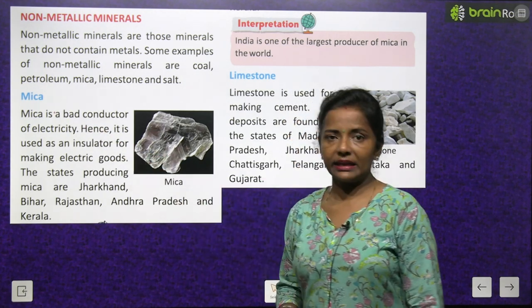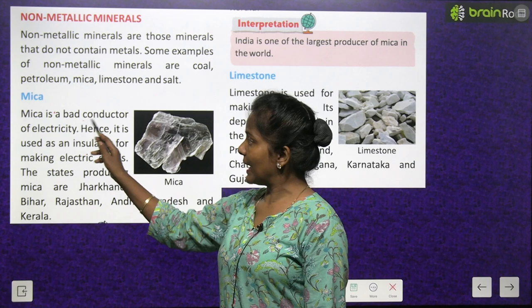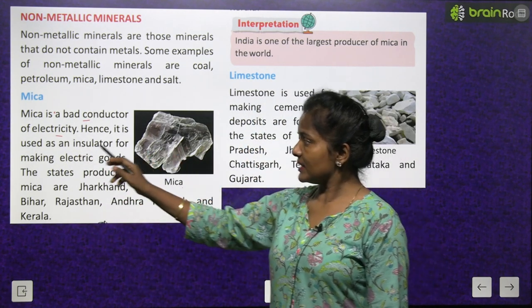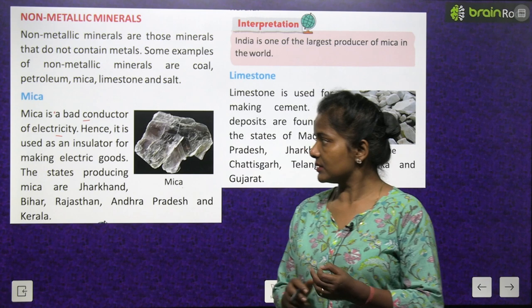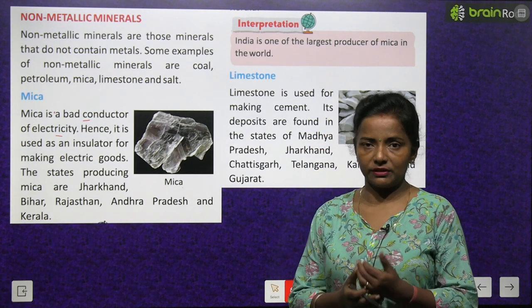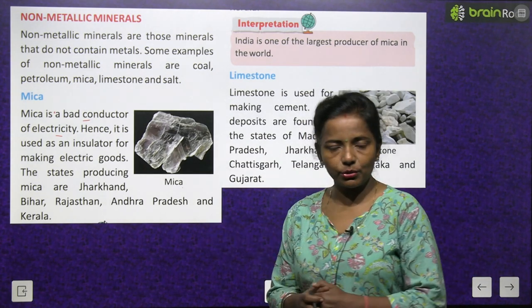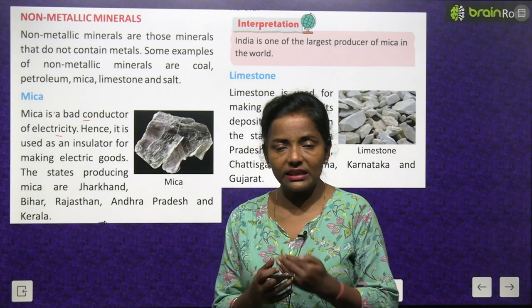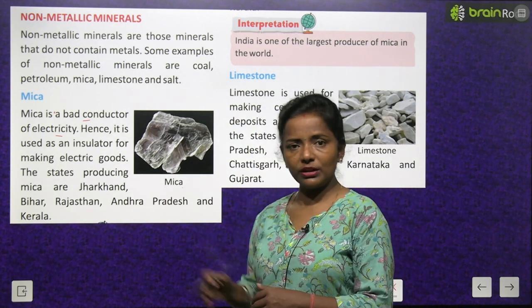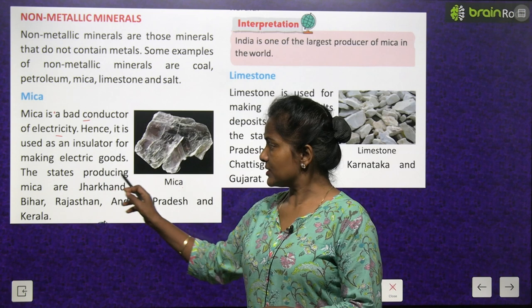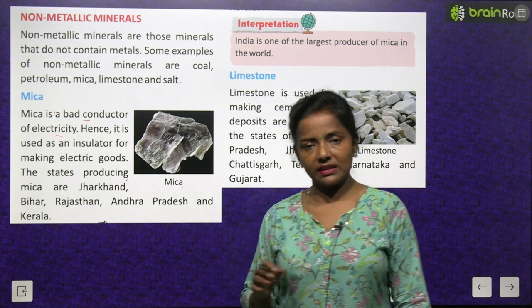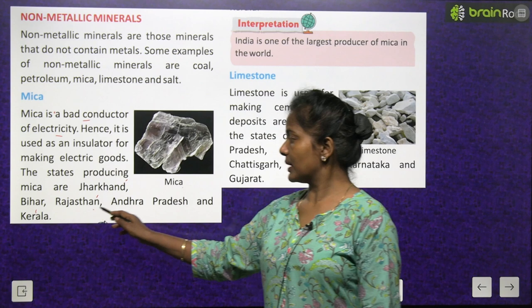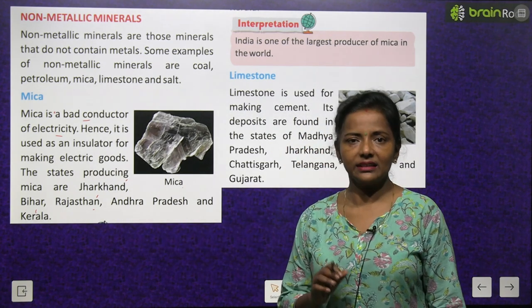First comes mica. Mica is a bad conductor of electricity — this is mica. Hence it is used as an insulator for making electrical goods. The states producing mica are Jharkhand, Bihar, Rajasthan, Andhra Pradesh and Kerala.